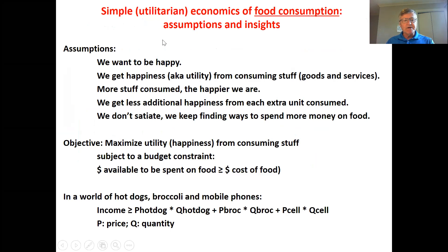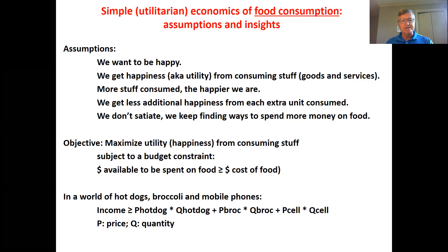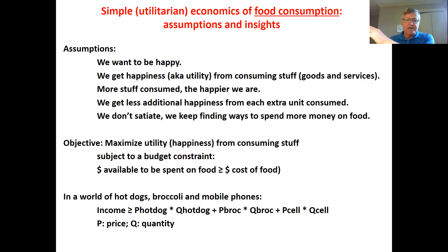This is the simple economics of food demand. We have five assumptions. We assume that consumers want to be happy — we all are consumers. We get happiness or utility from consuming goods and services, including food. The more stuff we consume, the happier we are. We assume that we get less extra happiness from every additional unit we consume. We get a lot from the first unit, a little less from the second, less from the tenth, and by the thirtieth unit we're not getting much extra happiness. We don't reach zero or negative happiness from consuming more — that's our assumption.